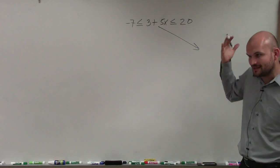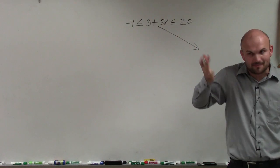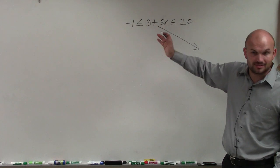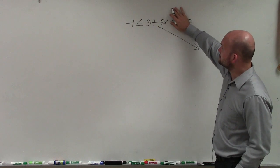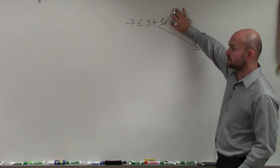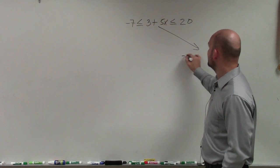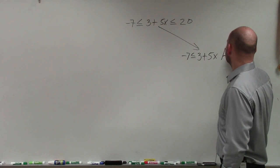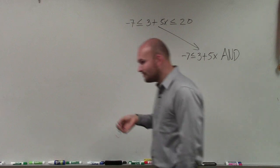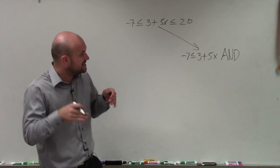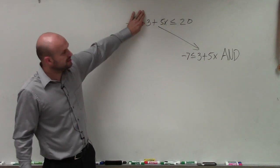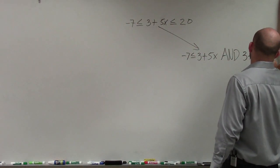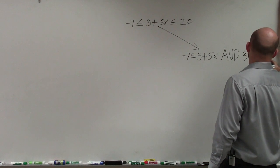So when we want to go ahead and solve this, the easiest thing and the best thing I like to do when students do not make mistakes is to write this as two separate inequalities. So to do that, just put your hand over one inequality and its other solution. And you have -7 ≤ 3 + 5x. And notice how I'm very stressing the AND. Then cover up the other side. 3 + 5x ≤ 20.